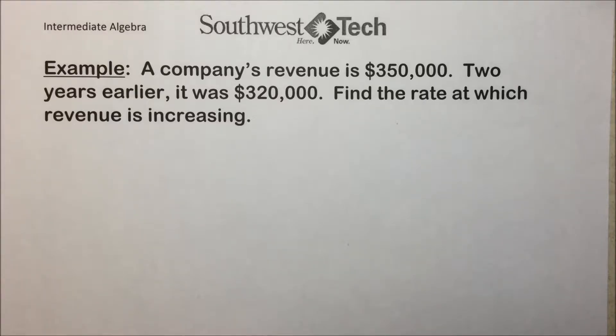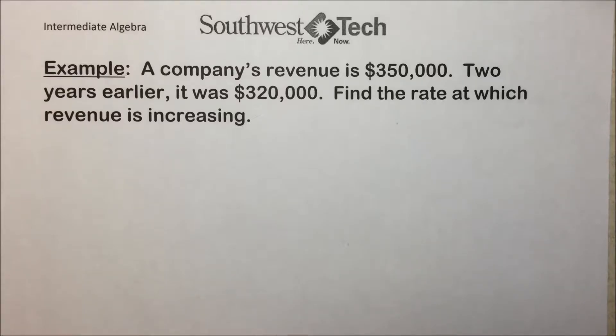Foremost is the use of slope to represent a rate of change. Let's look at a couple of examples. A company's revenue is $350,000. Two years earlier, it was $320,000. Find the rate at which the revenue is increasing.